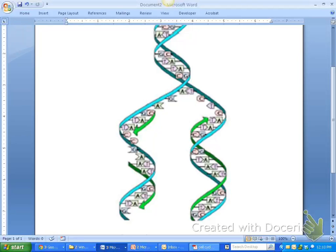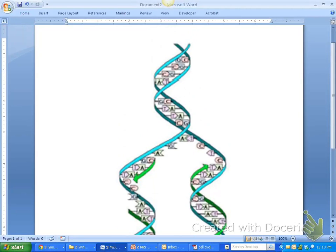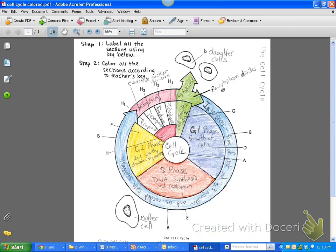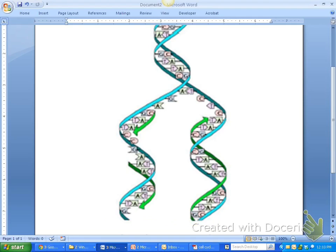So you should have two worksheets in front of you. You should have a half page that looks like DNA going through replication, and you should also have a picture like this. Now yours isn't colored yet. We're going to go through and color it here later. So let's go ahead and take this one out.